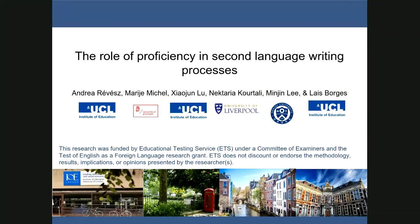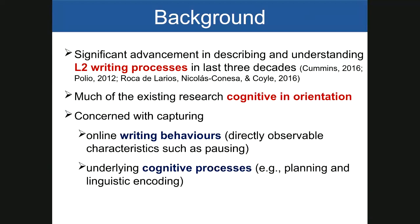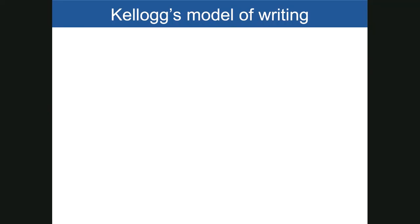The title of the talk is 'The Role of Proficiency in Second Language Writing Processes.' The last few decades have seen significant advancement in describing and understanding second language writing processes. Much of this work has been cognitive in orientation, concerned with capturing online writing behaviors — the directly observable characteristics of the writing process such as pausing and revision — as well as the cognitive processes that underlie these behaviors, such as planning and linguistic encoding.